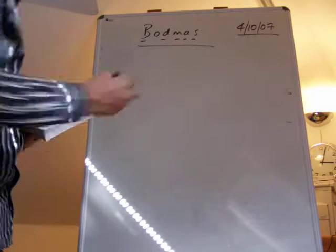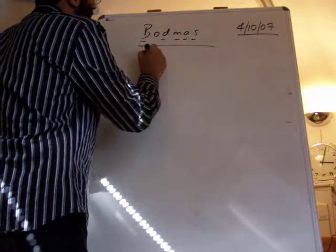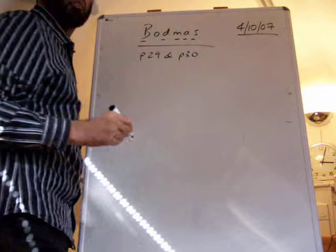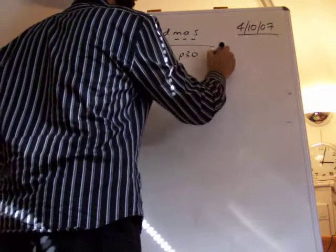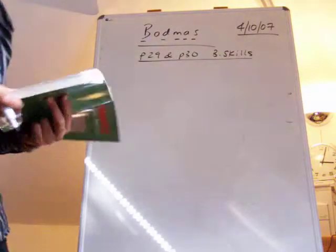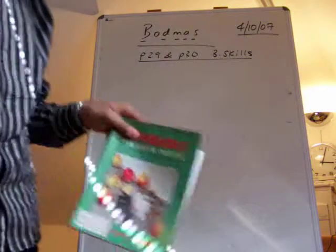So we are based on page 29 and page 30 of the Basic Skills book. So that's the place that you're going to find your homework on. So you need to get your green apple book.